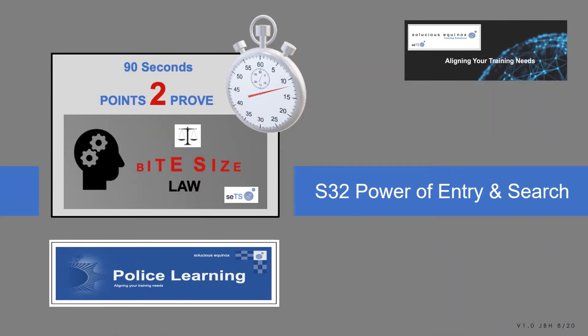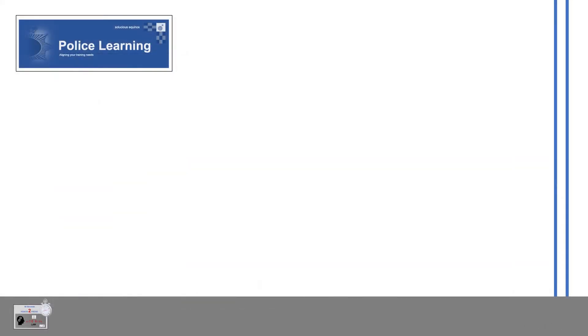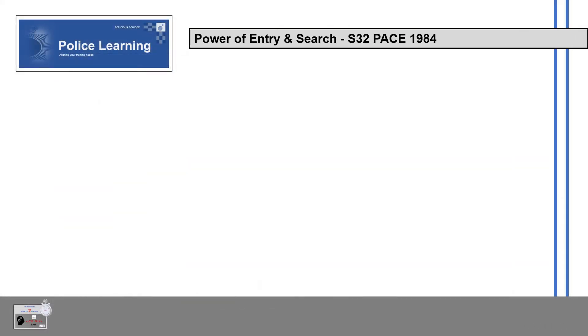Welcome to your 90 seconds points to prove for Section 32: Power of Entry and Search, brought to you by Seleucious Equinox for Police Learning. Power of Entry and Search — Section 32.